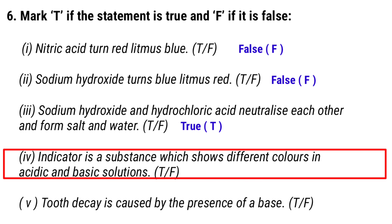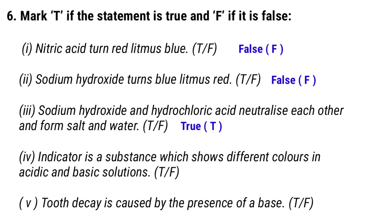Number 4: An indicator is a substance that shows different colors in acidic and basic solutions. It shows different colors in basic and acidic solutions. Answer: True.